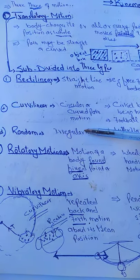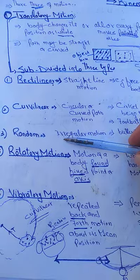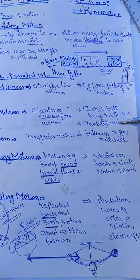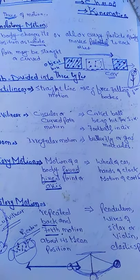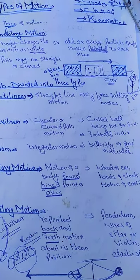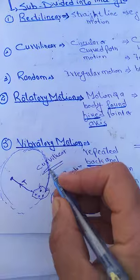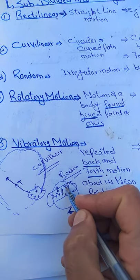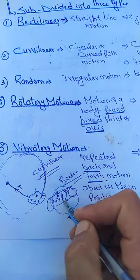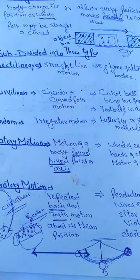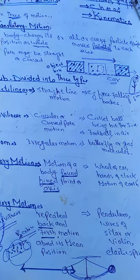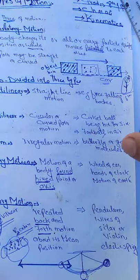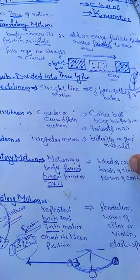Then the third type is random motion. Random motion is that type of motion in which an object moves in an irregular manner - there is no proper regularity. For example, consider a butterfly: a butterfly moves in no fixed direction - it moves randomly. Another example: when there is a break at school, students are in the playground moving in all different directions. This type of motion we call random motion.